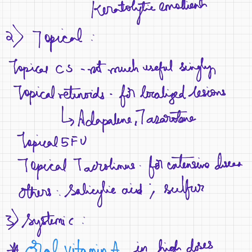Topical keratolytic agents are mainly the topical retinoids, and can be used for localized lesions. These include adapalene and tazarotene. Topical 5-fluorouracil and topical tacrolimus can also be used. Tacrolimus has been found particularly useful for extensive disease, and other keratolytic agents such as salicylic acid and sulfur can be tried.